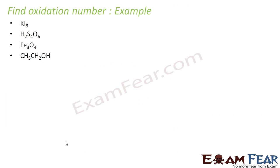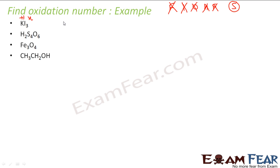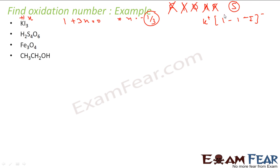Let's try to find the oxidation state of KI3. We'll apply the same formula. KI3 — can we apply the free element rule? No, it's not a free element. Not ions, no oxygen, no hydrogen, no fluorine. We apply the next principle: group 1 elements have oxidation state of plus 1. K is group 1, so it becomes plus 1. Let iodine be x. Sum of all oxidation states equals 0: 1 (for K) + 3x (for iodine) = 0. x = minus 1/3, which is fractional. The structure of KI3 shows 3 iodine atoms: 2 of them have oxidation state 0, and 1 has minus 1. The average overall oxidation state is minus 1/3.